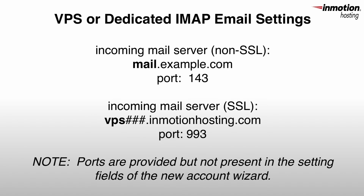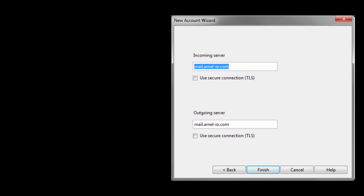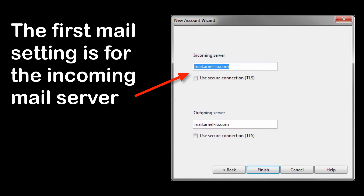If you're on a VPS or dedicated server, you will need to type in the server name directly. For example, if you're on VPS 3000, then you would need to type in vps3000.inmotionhosting.com. In order to use a secure connection, you would need to click on the box that says Use Secure Connection with TLS.